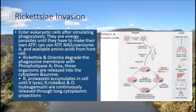In contrast, the typhus group accumulates in the cell cytoplasm until the cell membrane lyses, signaling cell death and bacterial release. It is believed that the fundamental difference is caused by intracellular mobility: the spotted fever group is able to polymerize host cell actin, whereas the typhus group lacks the required gene. Once these bacteria are released from the host cell, they are unstable and die relatively quickly.